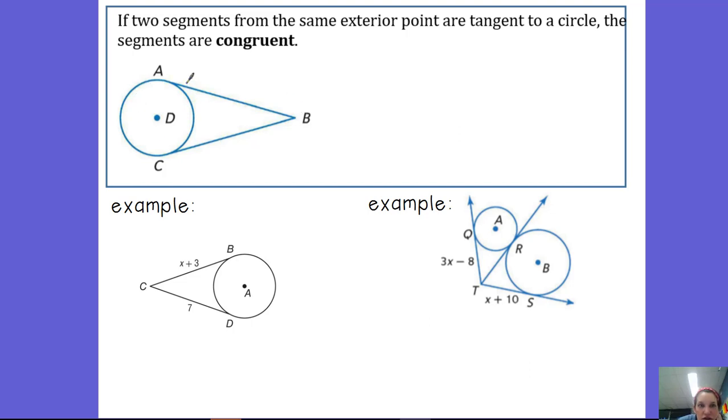If you have a circle with two tangents, and those two tangents intersect at the same exterior point, so they intersect at a point outside of the circle, then those two tangent lines, those two segments, are going to be congruent to each other.